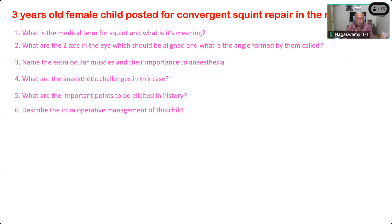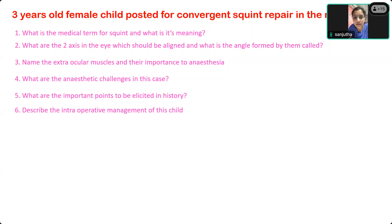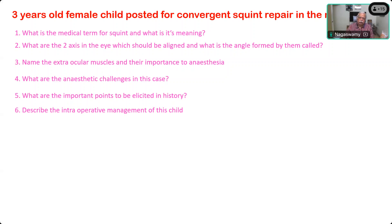What are the pre-op instructions you will give the parents and what pre-medication do you want to give? For pre-medications, I will give anticholinergics - glycopyrrolate 0.01 milligram per kg. Whenever the dose is very small in pediatrics, always say it in micrograms instead of milligrams - that is much easier to calculate.